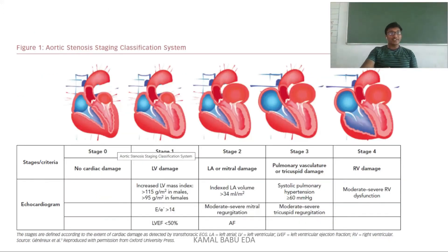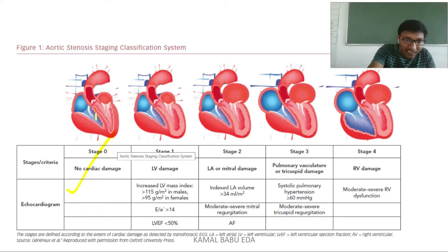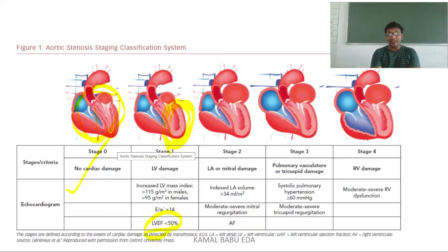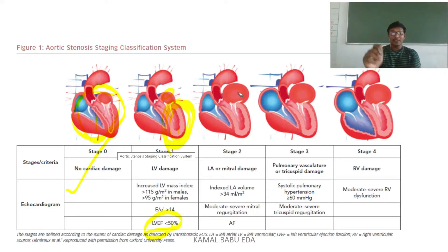According to staging, in Stage 0 there is no cardiac damage — even though aortic valve stenosis is present, no cardiac damage is observed. In Stage 1, left ventricular hypertrophy is present: the left ventricular mass is increased, greater than 115 g/m² in males and greater than 95 g/m² in females. The left ventricular ejection fraction is less than 50%. Only the ventricle is disturbed; the atrium is fine.